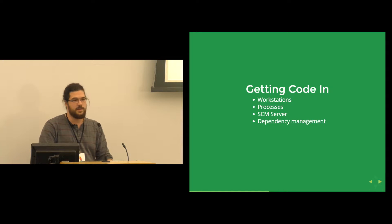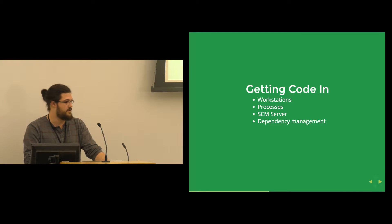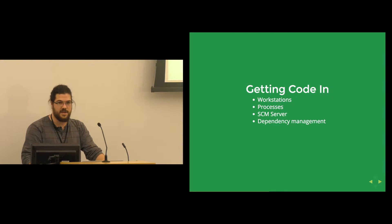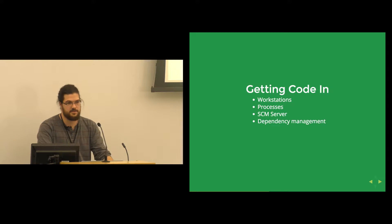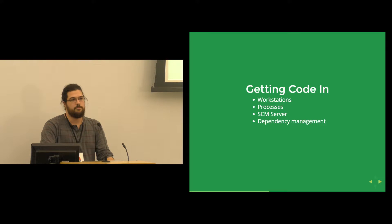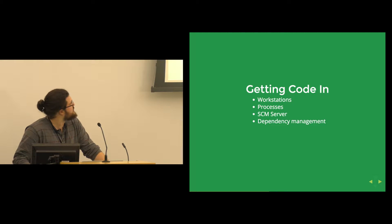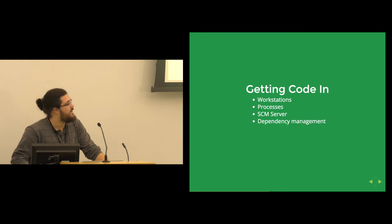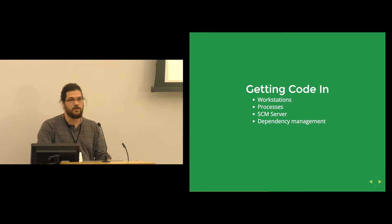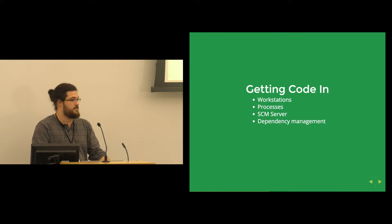We're going to talk about the pieces specific to doing this for mobile. The process of getting code into the pipeline has a couple of different components. We have workstations where developers write code, and we need to figure out what tools we want and the standardization of those environments. There are processes that are not fully technical — things you do in your team room like code review, pair programming, or manual validation steps before triggering CI. You'll need some kind of source control management server, whether hosted locally or on GitHub. And we need to figure out dependency management — pulling in first-party or third-party libraries.